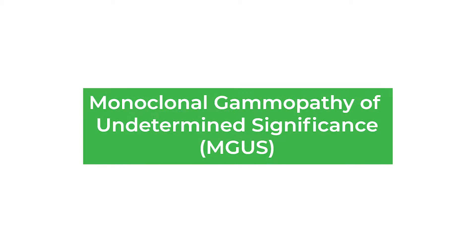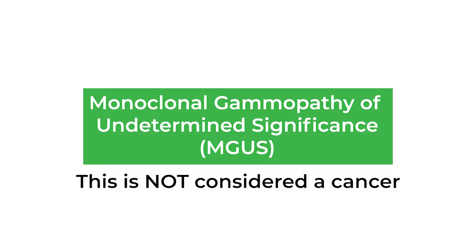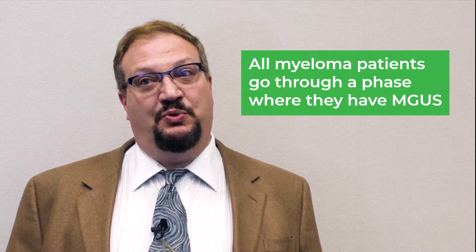One is what we call monoclonal gammopathy of undetermined significance, or MGUS. This is more common as people age. We don't consider it a cancer — in most people it never becomes something we need to be concerned about and rarely requires intervention. But when someone has it, we watch their proteins, because those people are at higher risk of eventually developing more significant problems like multiple myeloma and other plasma cell disorders.